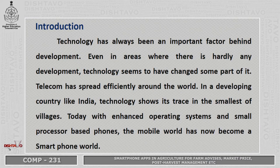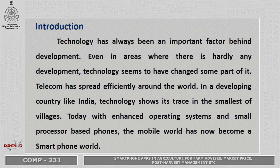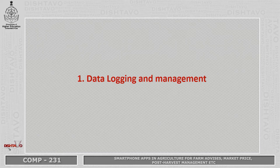Let's try to understand what are the general agricultural applications. Technology has always been an important factor behind development, even in areas where there is hardly any development. Telecom has spread efficiently around the world, and in developing countries like India, technology shows its traces in the smallest villages. Today, with enhanced operating systems and small processor-based phones, the mobile world has become a smartphone world. By using mobile synchronized with various agriculture information applications, smartphones are now providing needy agricultural information to the farming community.